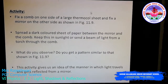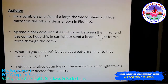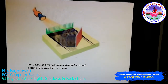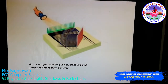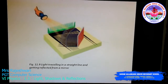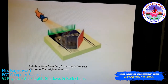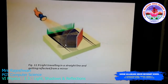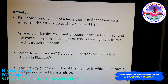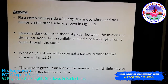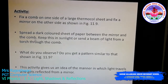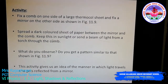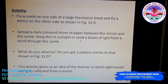To do this activity, fix a comb on one side of a large thermocool sheet and fix a mirror on the other side. In between the comb and the mirror, fix a dark sheet of paper. You can then keep this setup in sunlight or send a beam of light from a torch through the comb.